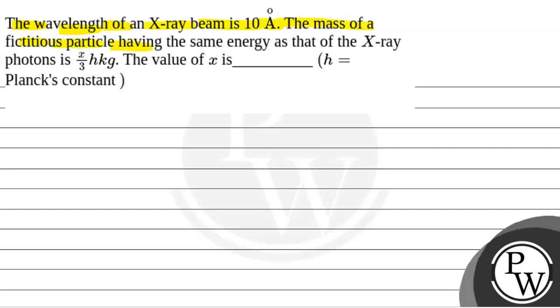The mass of a fictitious particle having the same energy as that of the X-ray photon is x by 3 h kg. The value of x is, where h equals Planck's constant.